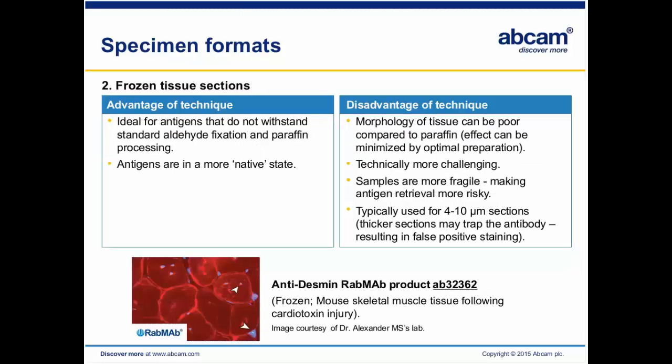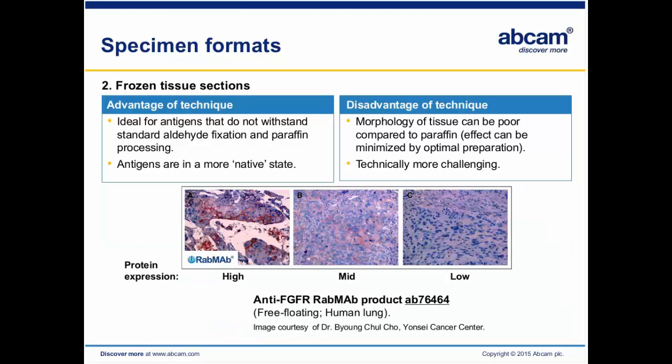Another common format is frozen tissue sections. On Abcam data sheets, when we say immunohistochemistry with frozen sections, this refers to non-aldehyde-linked fixation. This is ideal for antigens that cannot withstand aldehyde fixation and paraffin processing, so these antigens tend to be in a more native state. The disadvantage is that tissue morphology can be poor compared to paraffin. It's technically more challenging, the samples are more fragile, antigen retrieval is more risky, and sections are typically four to ten microns. Thicker sections may trap the antibody, resulting in false positive staining.